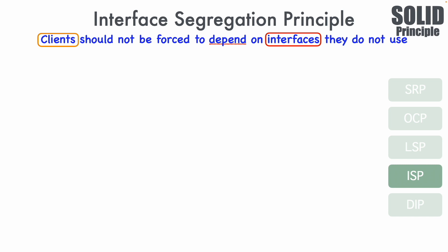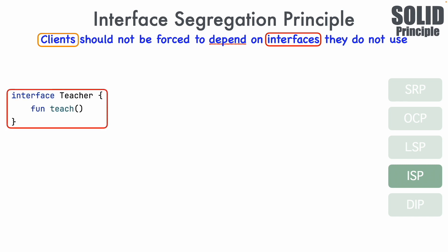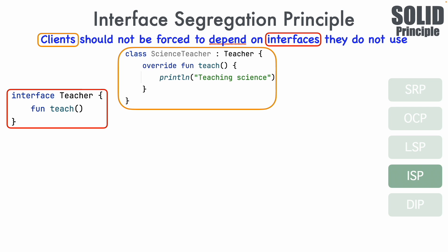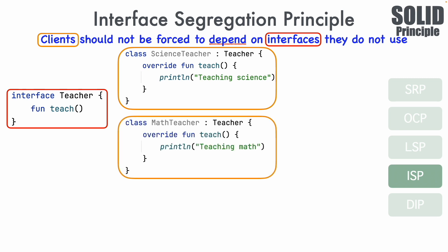Let's take an example of an interface called Teacher. It has a stub function called teach. There will be a concrete class which implements this interface — a class called ScienceTeacher which implements Teacher and provides the implementation of teach. Similarly, there could be a MathTeacher class which also implements Teacher and overrides the function teach. So both ScienceTeacher and MathTeacher are implementing classes of the Teacher interface, making them clients of Teacher.